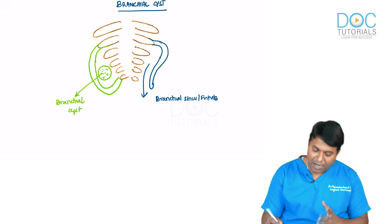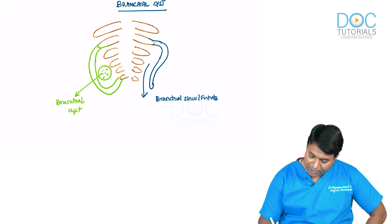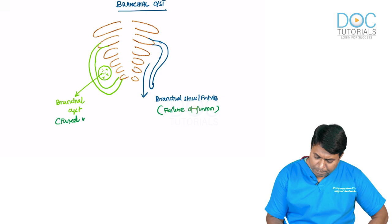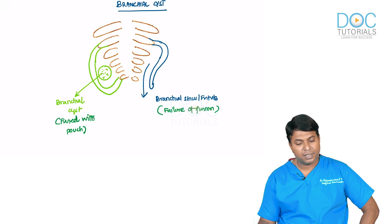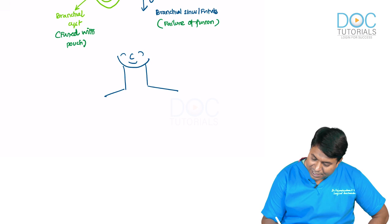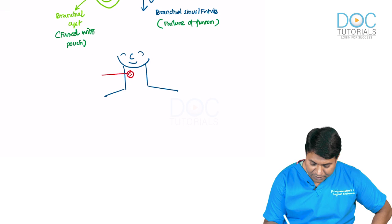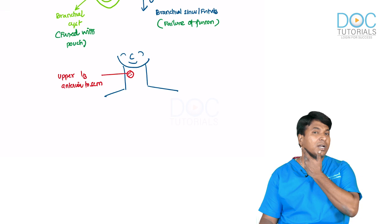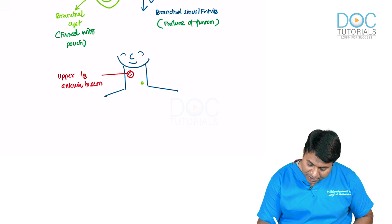The most common anomaly is second arch anomaly. Failure of fusion results in persistence as branchial sinus or fistula; fusion with the pouch remaining patent is a branchial cyst. The branchial cyst is seen anterior to the sternocleidomastoid in the upper third. The branchial fistula opening is seen in the lower third anterior to sternocleidomastoid.